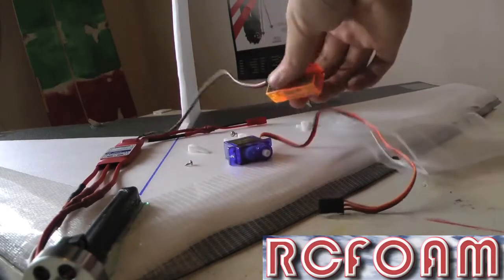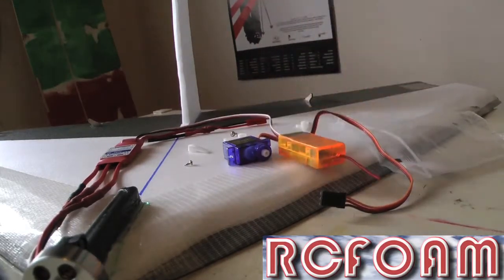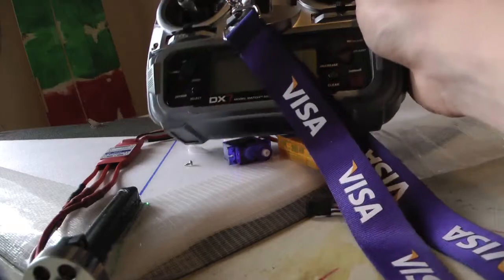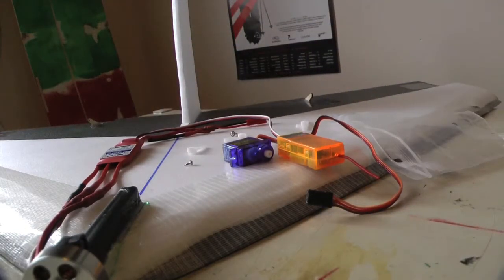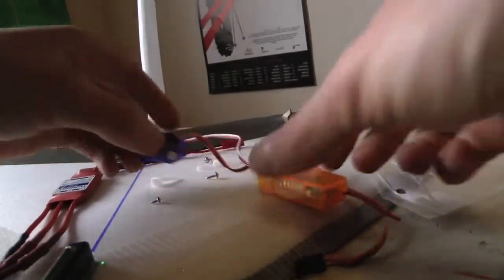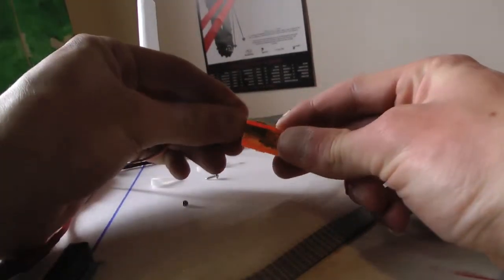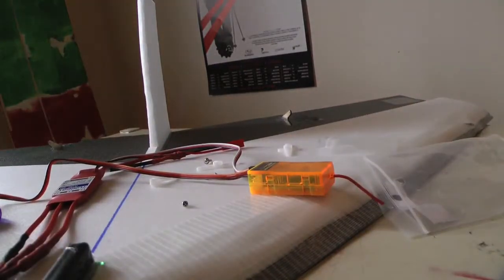So now what you're going to want to do is get your receiver that you're going to use and get your radio and go to the model that you're going to use for this plane and set all the trims and sub-trims to zero. And then get your servo and plug it in, doesn't matter, just plug into the elevator or aileron.